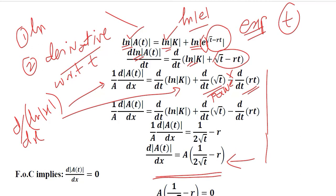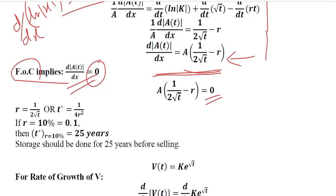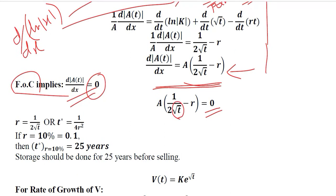This is the final step in this process. To maximize, we apply the first order condition, which requires the first order derivative to equal zero. We set this first order derivative equal to zero and solve for t, because we want to know that certain point in time when the value of wine will be maximum. Simple algebra gives us t in terms of r, where r is the discount rate.